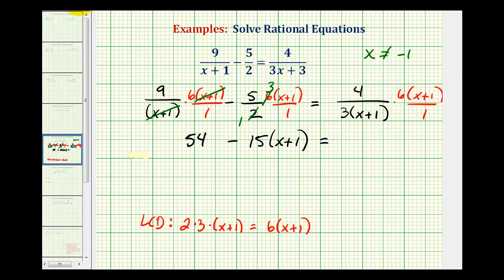on the right side, we have x plus 1 over x plus 1, that simplifies to 1. 6 and 3 share a common factor of 3. This simplifies to 1, this simplifies to 2. Notice our denominator is equal to 1, leaving us with just 4 times 2, which is equal to 8.